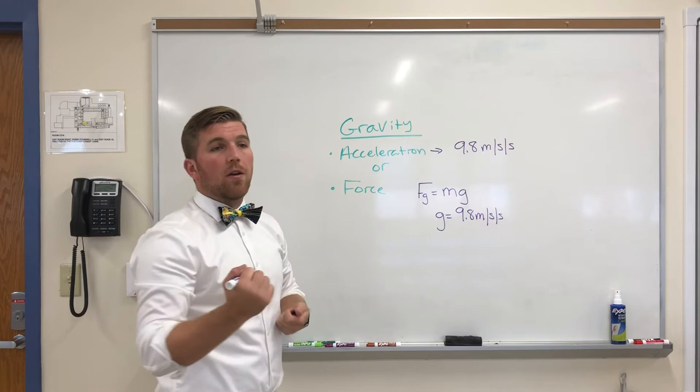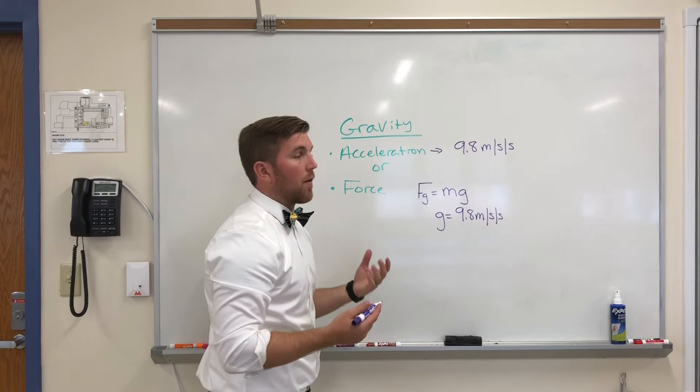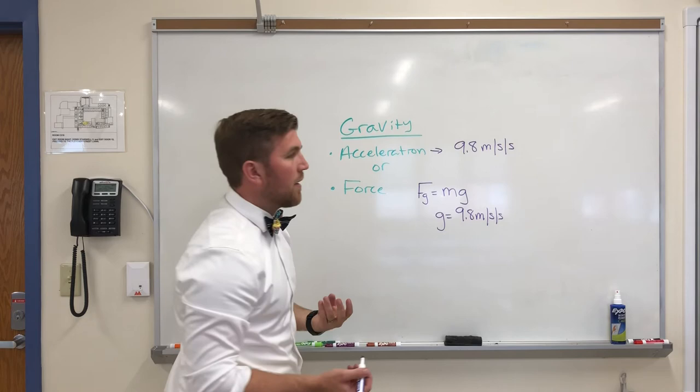So for right now, we're looking just at the acceleration of gravity being 9.8 meters per second per second. You may notice or be saying to yourself, is this a vector? We've already said acceleration is a vector. So 9.8 meters per second per second is a vector.